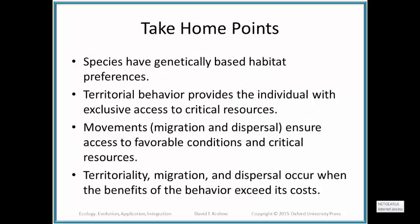Take-home points: Species have genetically based habitat preferences. Territorial behavior provides the individual with exclusive access to critical resources. Movements such as migration and dispersal ensure access to favorable conditions and critical resources. Territoriality, migration, and dispersal occur when the benefits of those behaviors exceed their costs — organisms operate in terms of cost-benefit and risk-benefit analysis.